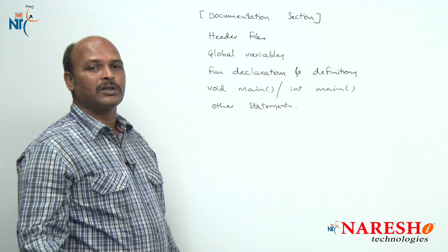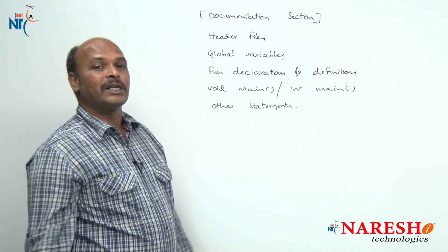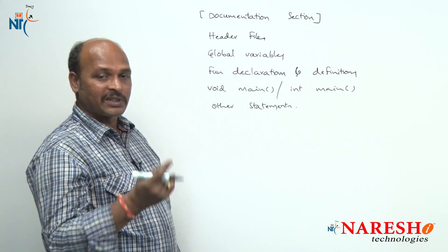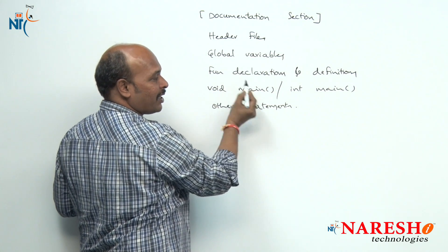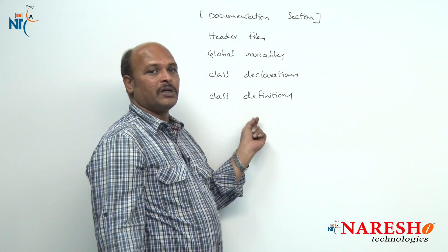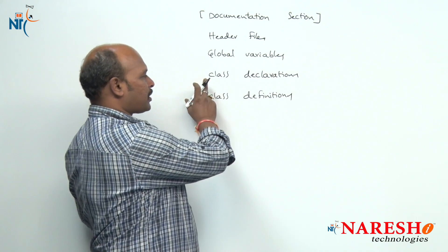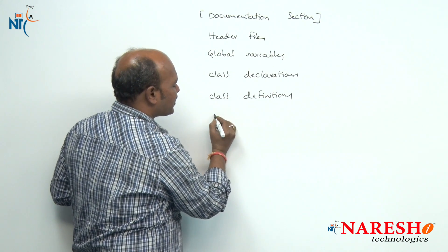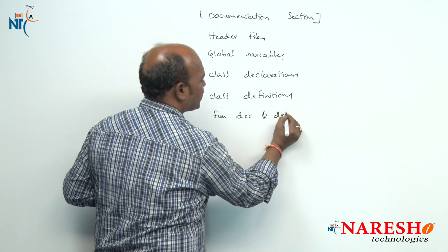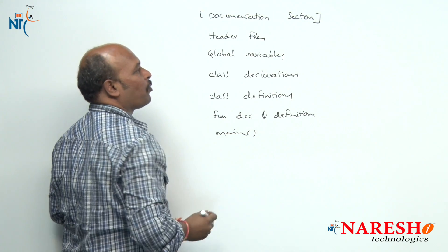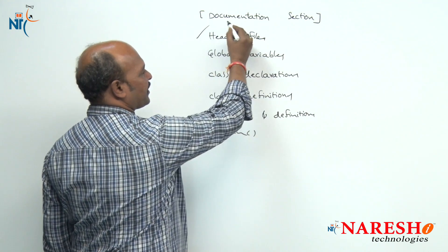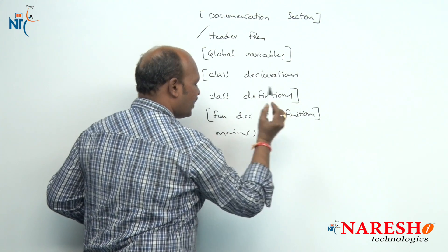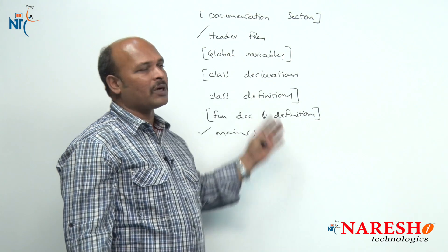The new concepts introduced in C++ programming structure are class declarations and class definitions — these two are not available in C but are available in C++. Everything else remains the same. To summarize: the documentation section is completely optional; header files are mandatory; global variables are optional; class declarations and definitions are optional; and function declarations, definitions, and the main part are mandatory. This is the programming structure of C++.